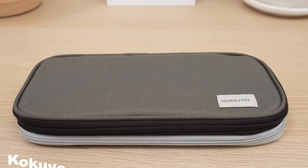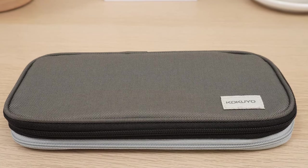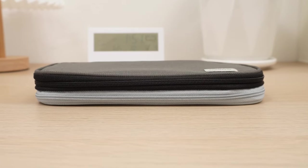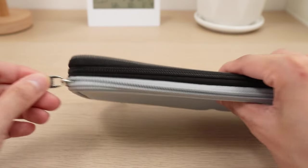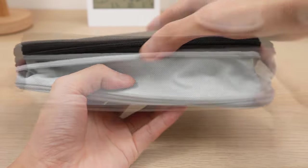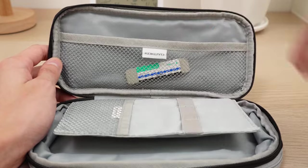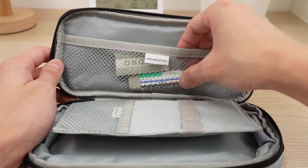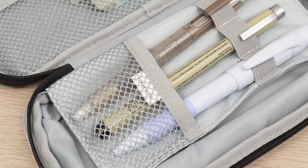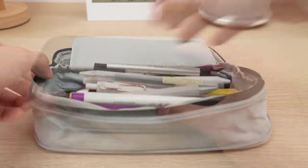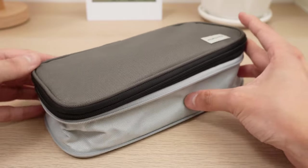First up, we have the Kokyo Pastel Cookie Expandable Pen Case, a stylish and functional choice. This case starts at a slim 27mm but expands to 67mm when unzipped, providing ample storage space. The top mesh pocket is perfect for small items like erasers, while the internal compartments keep your pens organized. With plenty of room in the bottom section, it's got you covered for all your stationery needs.